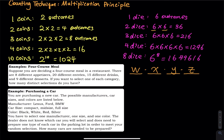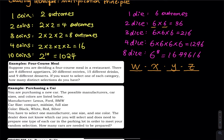Let's take a look at the first problem: a four-course meal. Suppose you are deciding a four-course meal in a restaurant. There are eight appetizers, 20 entrees, 15 different drinks, and nine different desserts. You pick one of each. The first pick is one out of eight appetizers — eight choices. Then one entree — 20 options. Then 15 drinks — 15 options. Then nine desserts — nine options. So you multiply them: eight times 20 times 15 times nine. The total is 21,600. That is the total number of outcomes.